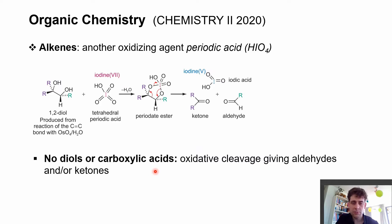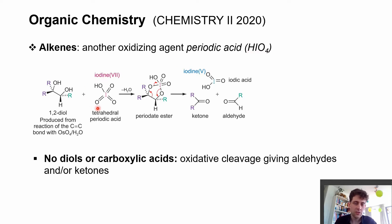The last oxidation component I would like to show you is the so-called periodic acid. That is basically an iodine atom with four oxygen atoms and a hydrogen, as you can see here.